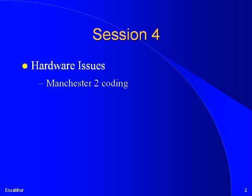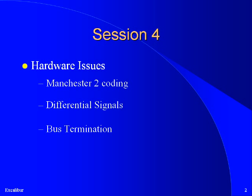Some issues, such as Manchester coding and differential signals, are important for anyone who may use an oscilloscope to help debug a system. Other issues, such as bus termination, are important to anyone setting up a bus, whether in the lab or on an aircraft.